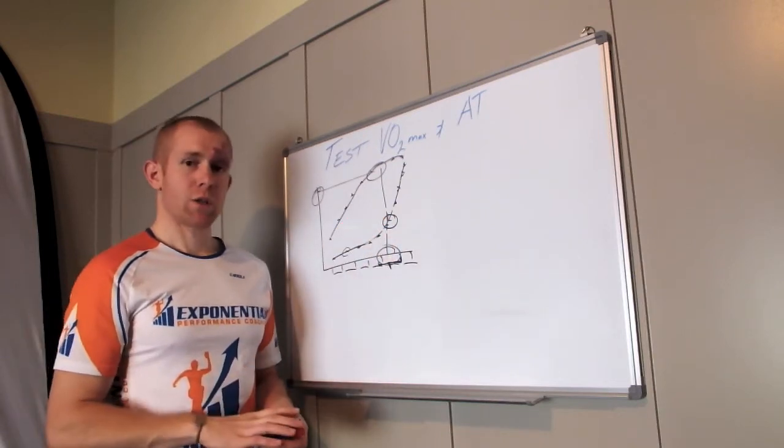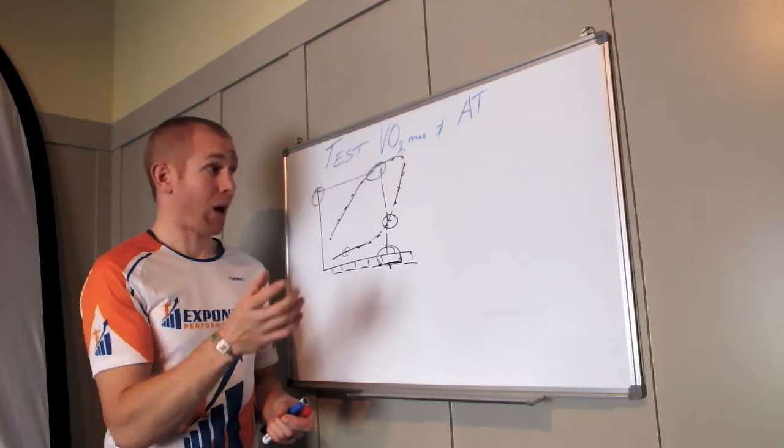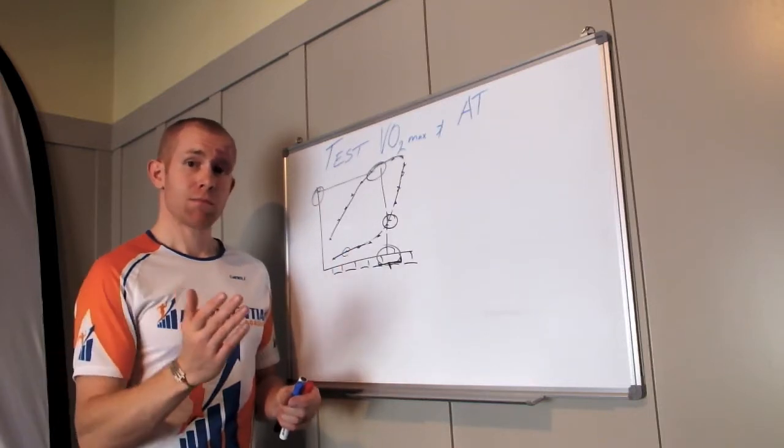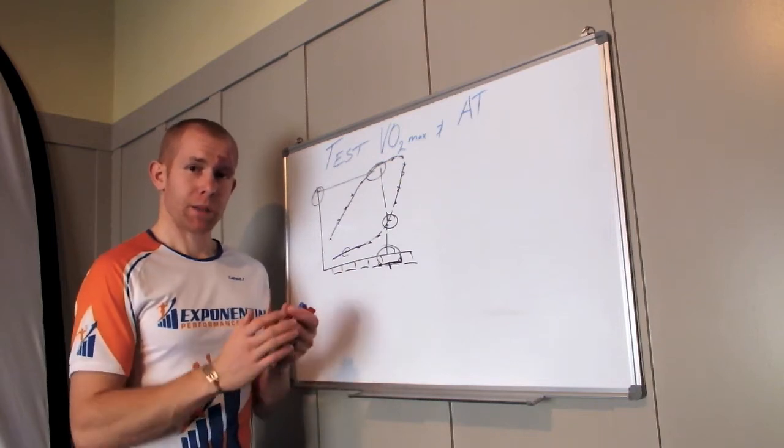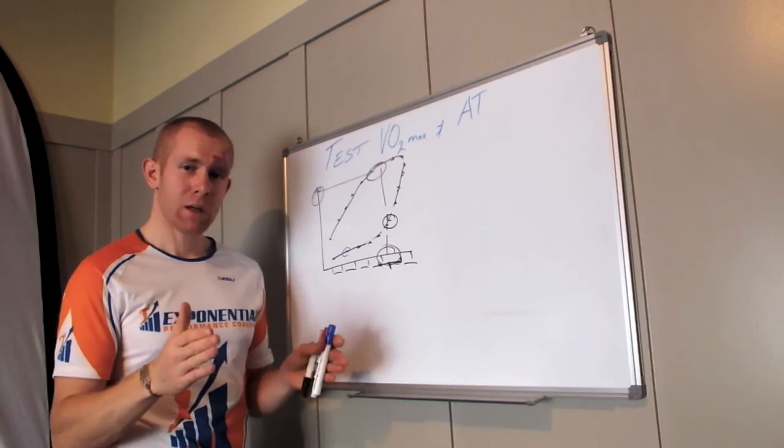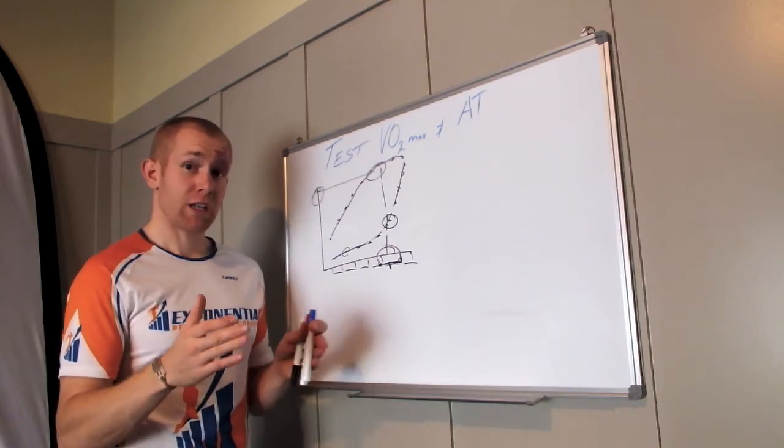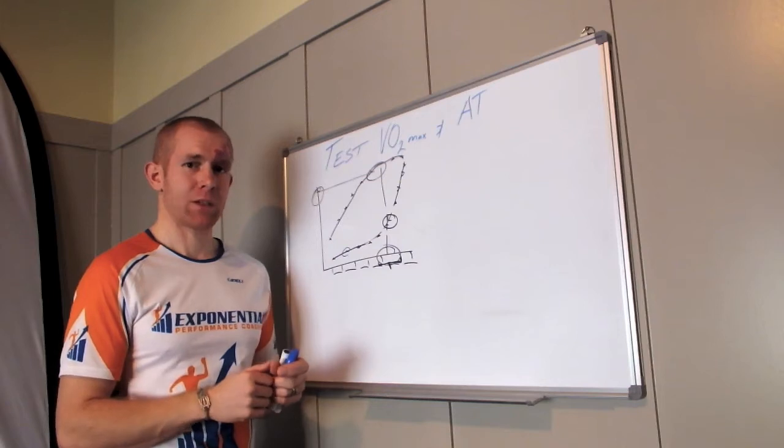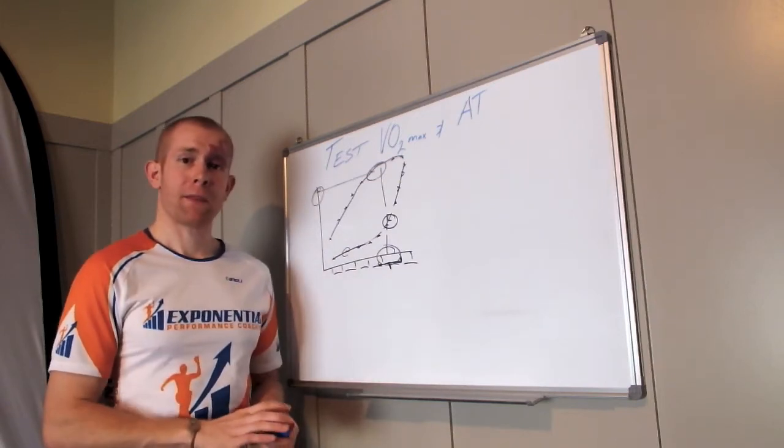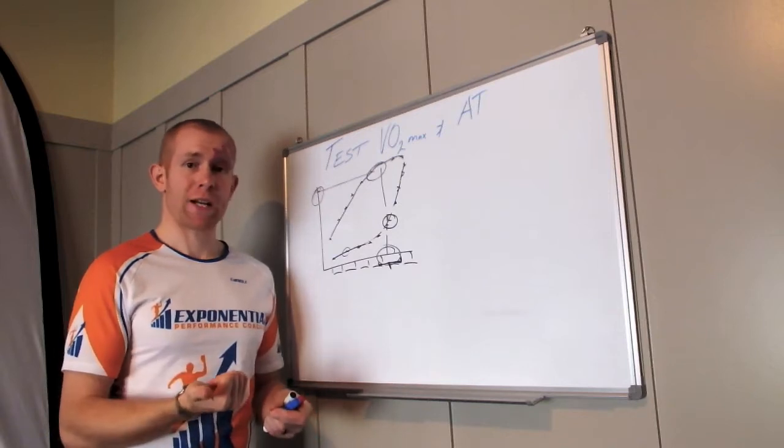Usually what you do is take the power or heart rate that you sustain for that 20 minute time period. You minus 5% off it because this is what you can usually sustain for about an hour. If you do a 20 minute result, it's about 5% less than your one hour result. Then you take that heart rate or power and jump over to Training Peaks, log in, go to zones.